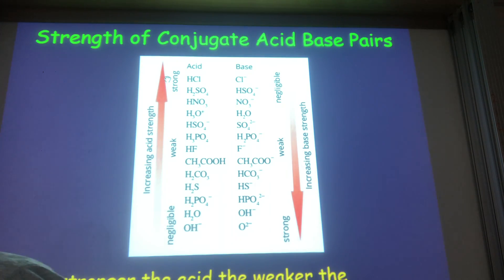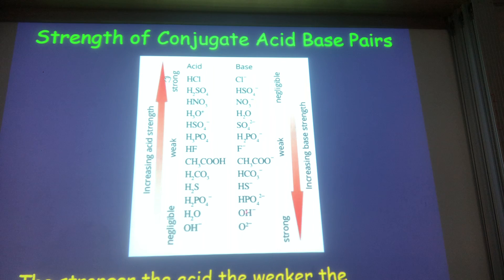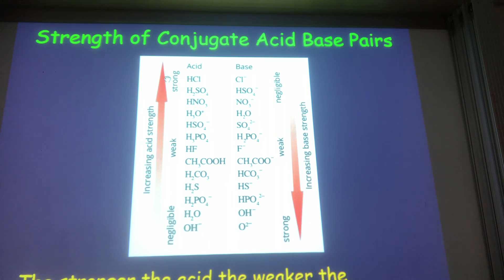Note that really strong acids — like HCl and H₂SO₄, hydrochloric and sulfuric — have really weak conjugate bases. Conversely, really strong bases have really weak conjugate acids. As the strength of the acid decreases, the strength of its conjugate base increases.